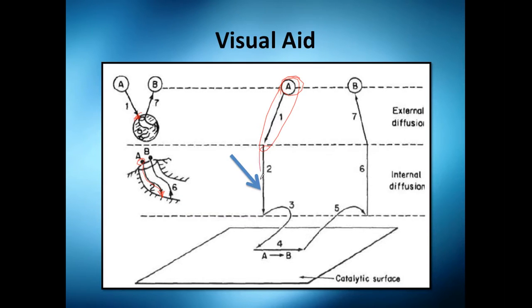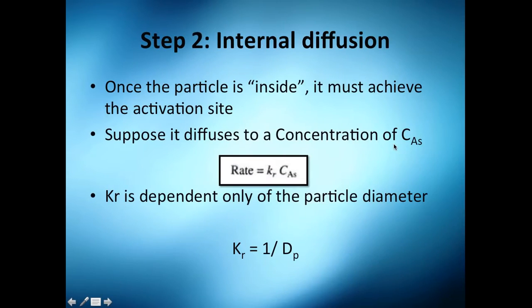It's called internal diffusion. Let's see how we can model that. Once it's inside, it must achieve an activation or active site. Let's suppose it diffuses to a concentration of C_AS in the site.